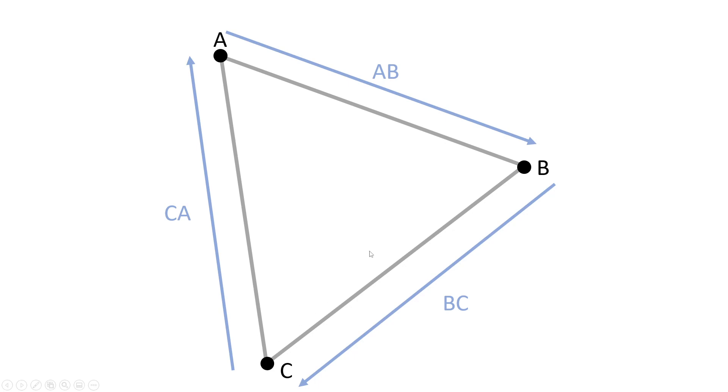This is a basic triangle polygon. The vertices are A, B and C.